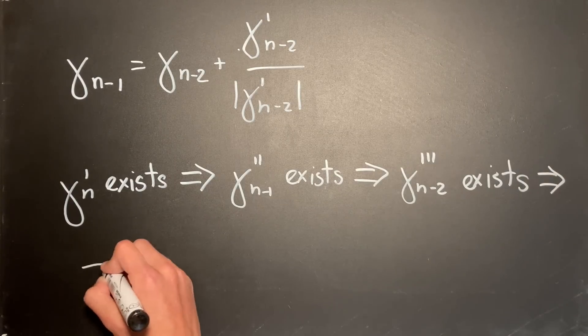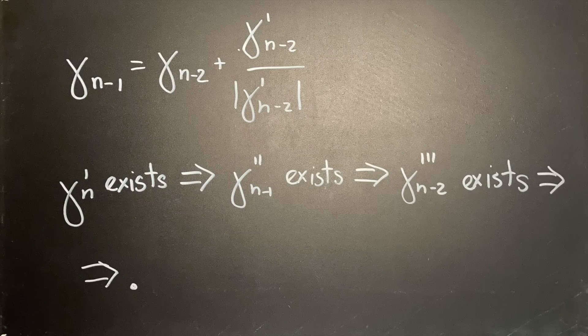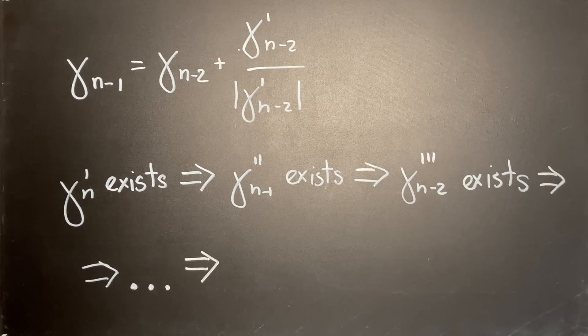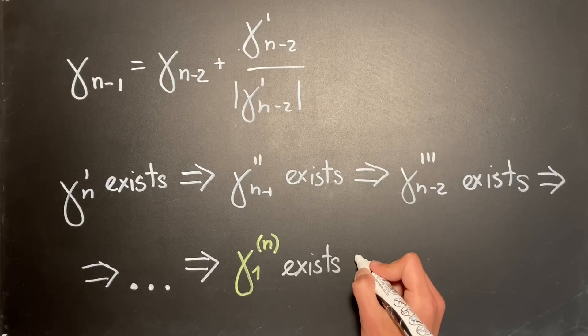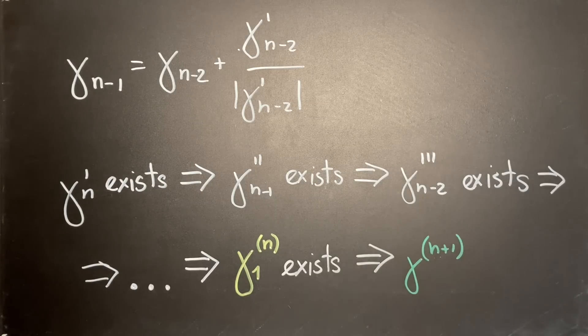Let's repeat our reasoning all the way back to the seat curve. For gamma_n to be differentiable, gamma_1 must have an nth derivative and gamma must have an (n+1)st derivative at any time between 0 and 1.